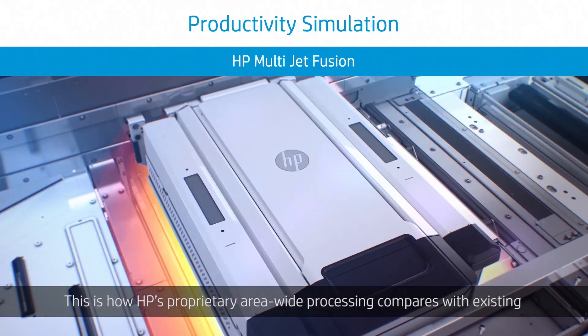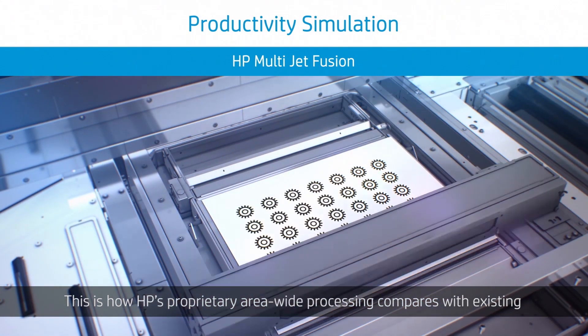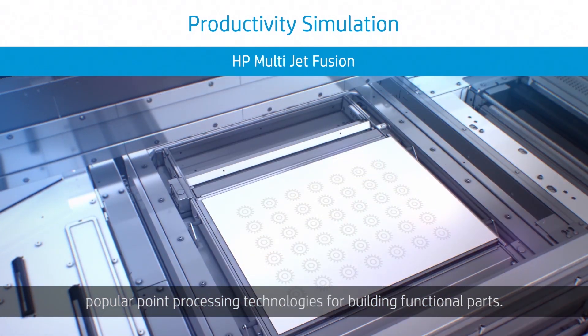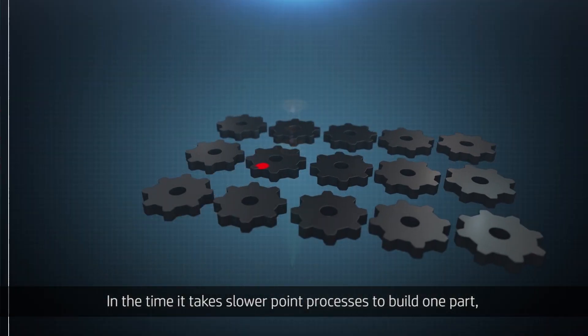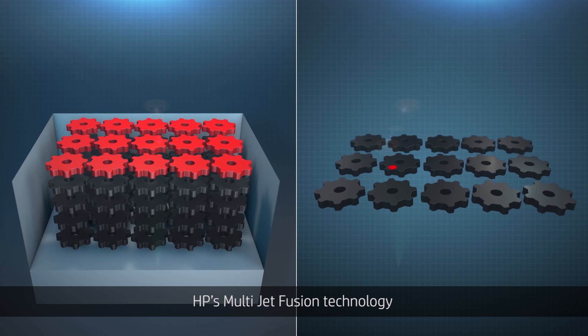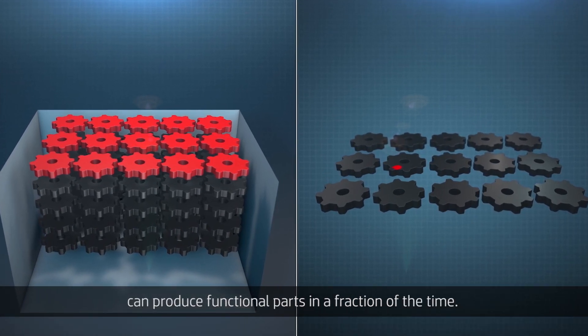This is how HP's proprietary area wide processing compares with existing popular point processing technologies for building functional parts. In the time it takes slower point processes to build one part, HP's Multi-Jet Fusion technology can produce functional parts in a fraction of the time.